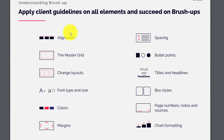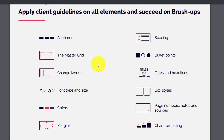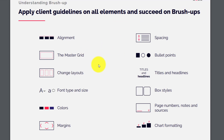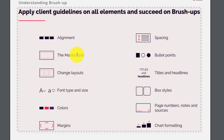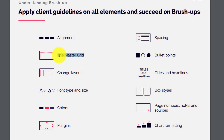Apply client guidelines on all elements to succeed on brush ups. The things you need to look for include: alignment — all elements should be properly aligned; spacing — you should take care of spacing; and the master grid — an invisible guideline or marker all around the slide that your elements should never cross. Bullet points are also specified in the guidelines, whether to use a box, square, circular, empty, or full bullet point.